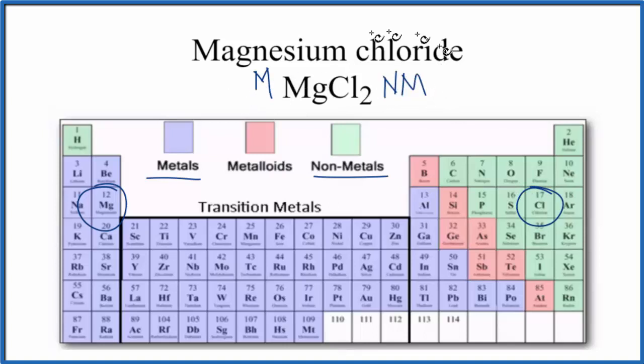So metal and nonmetals here, that will give us an ionic compound almost all the time, with just a few exceptions. So the bond between the magnesium and the chlorine atoms, that will be ionic.